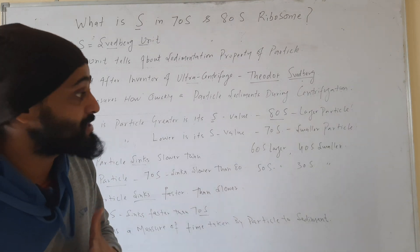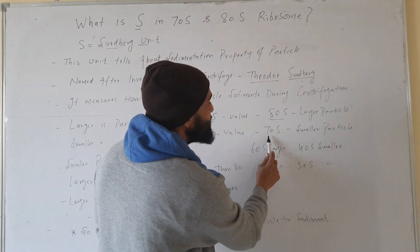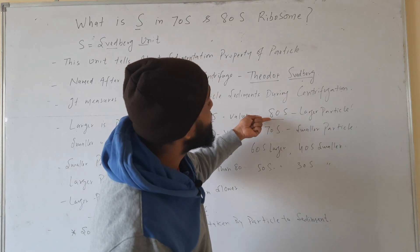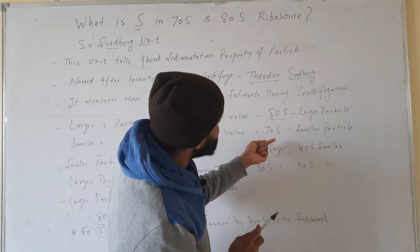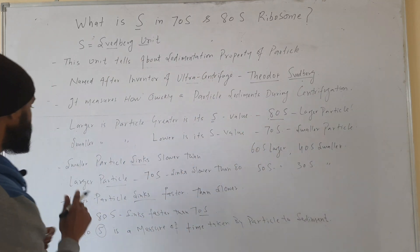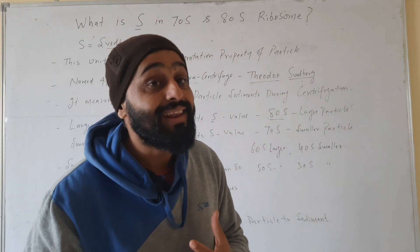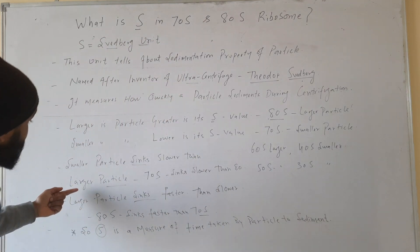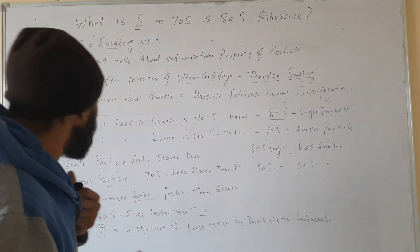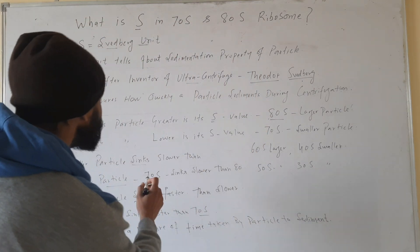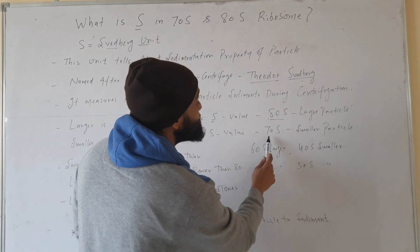If a particle is smaller in size, it has a lower S value. This 80S is larger than 70S, that's why it has a larger S value. Larger particles sink faster than smaller particles. So 80S will sink faster and 70S will sink slower than 80S.